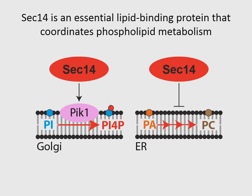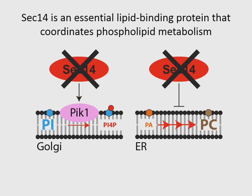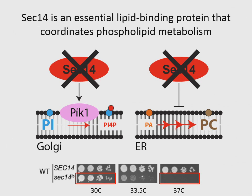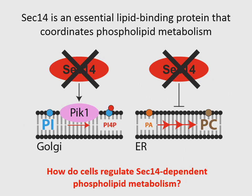SEC14 is a central protein, so if you delete it the cells die. We can use temperature-sensitive mutants to see this phenotype. Under these conditions, PI4-P levels are reduced whereas phosphatidylcholine levels are increased. We were interested in finding out if there were any regulatory pathways involved in SEC14-dependent phospholipid metabolism.